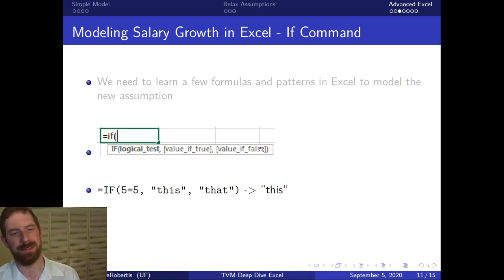Five does equal five, that's true, so we're going to go into the value if true. What this function is doing is just if this condition is true then it's going to give you this value, if it is false then it's going to give you the other value.